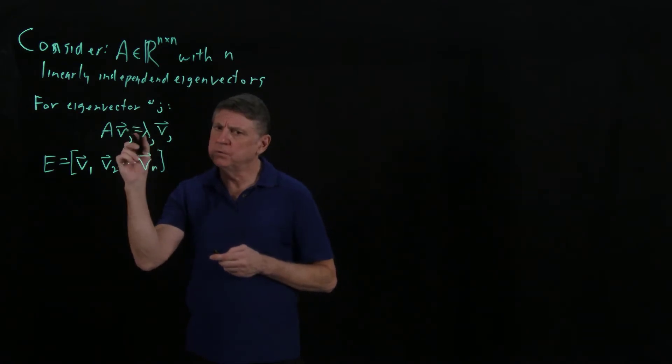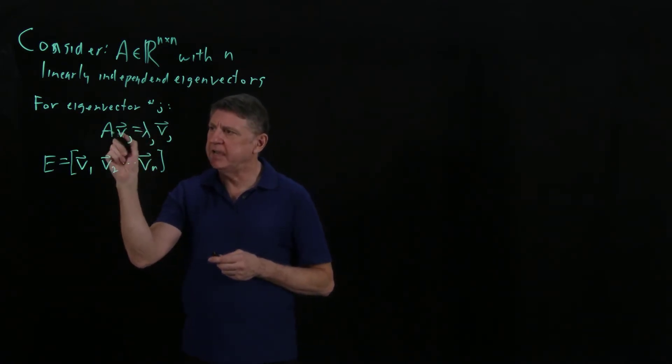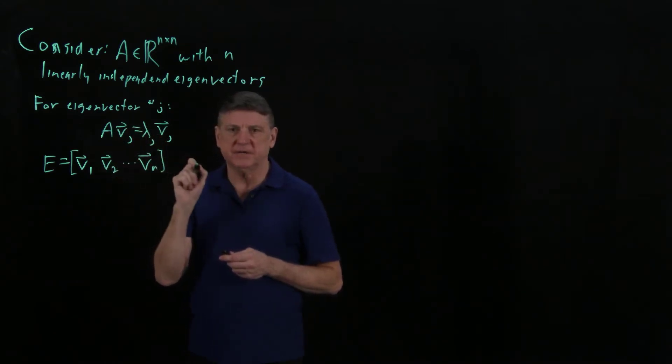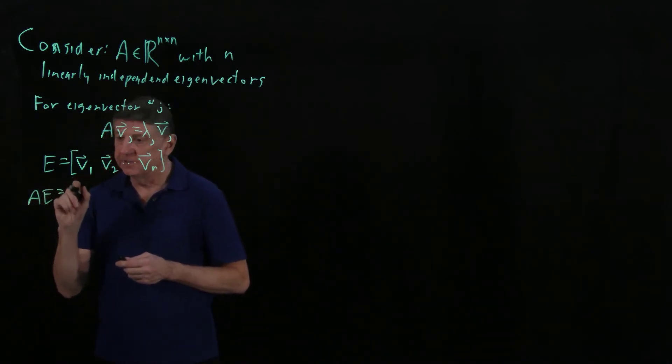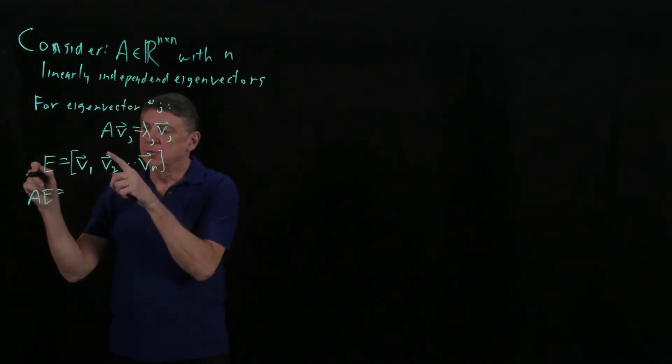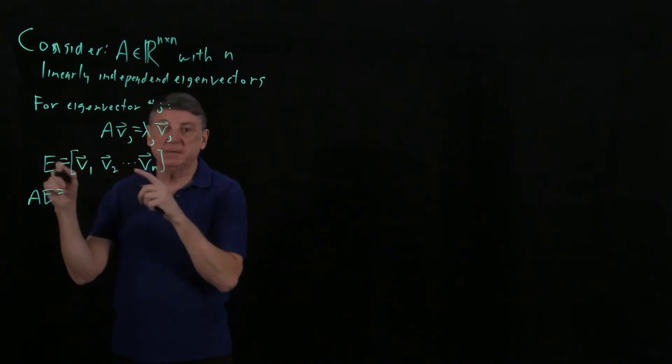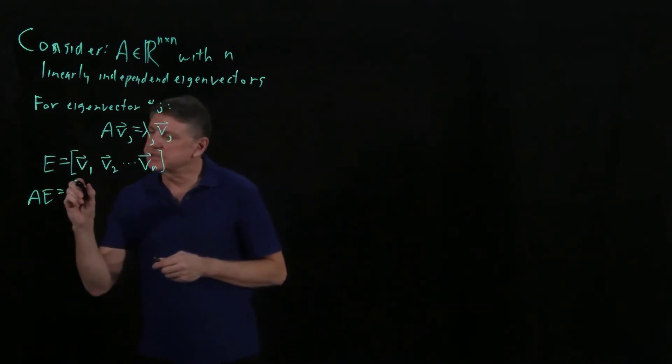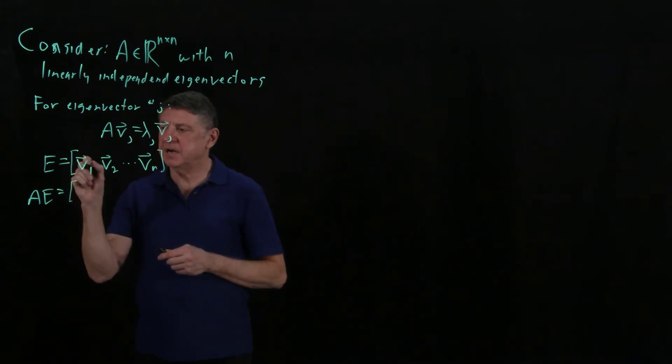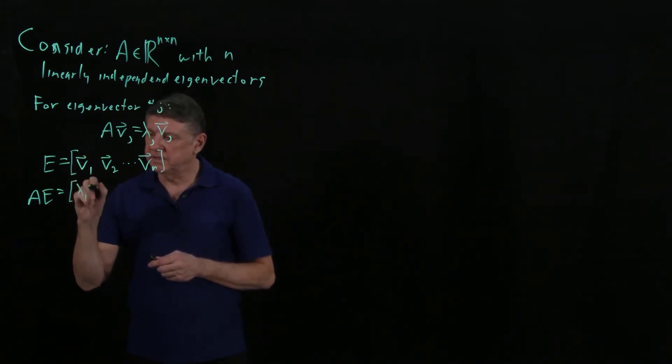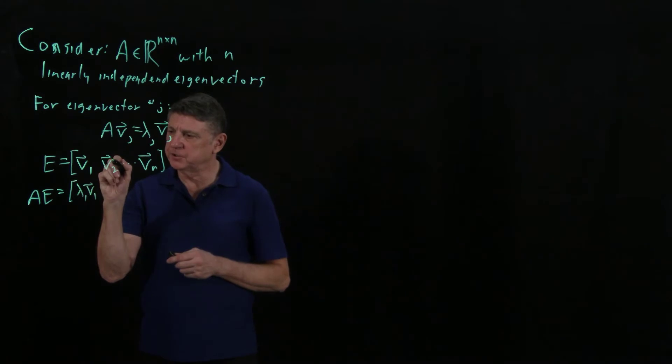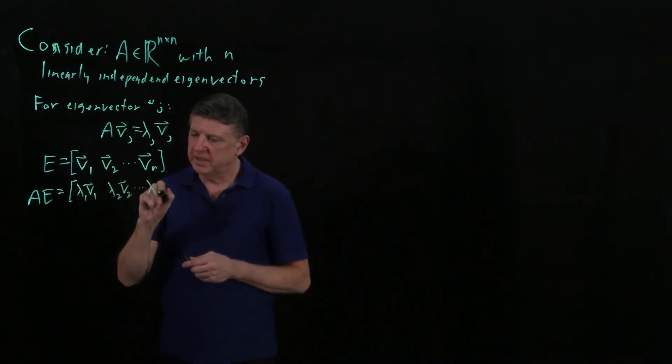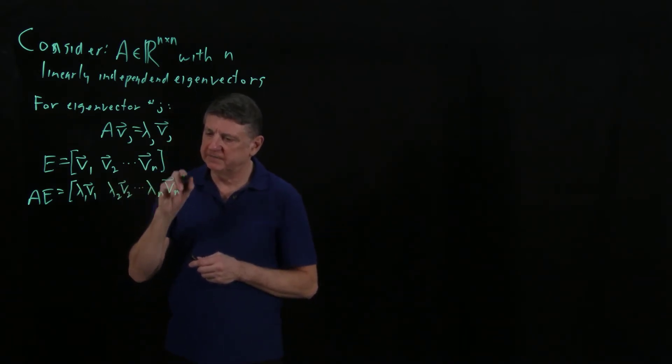Now suppose that what we do is we take A and we operate on every one of the eigenvectors. Well, how can we do that? There are two ways that we can do this, and they're equivalent. Either I could do a block partitioning multiplication, but let's keep it a little simpler. What we know is that A times v1 has to be lambda 1 times eigenvector 1, and A times eigenvector 2 has to be lambda 2 times eigenvector 2, and so on, until we have expressed all of the eigenvectors in the matrix E.